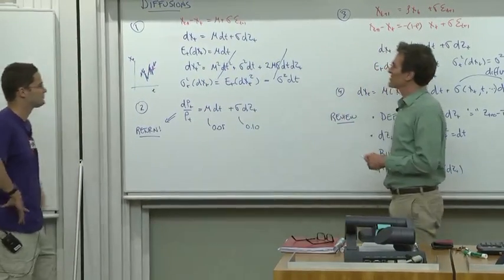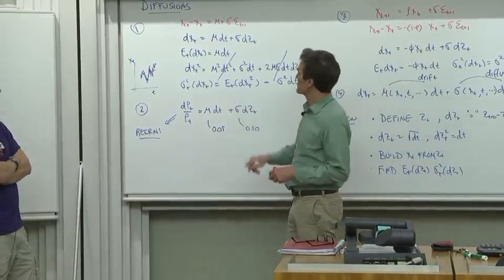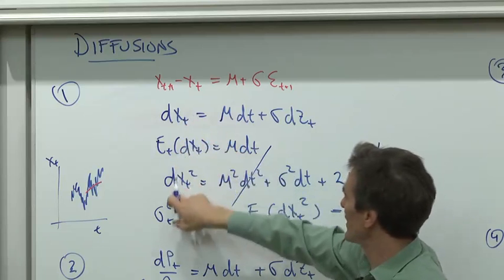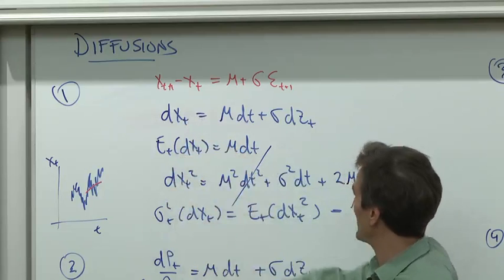This is one of the very interesting properties of continuous time models. Let's do it a little bit more slowly. Let's do what you want to do. You want to take dxt. Let's look at dxt squared. Let's just square dxt mechanically. What do you get?